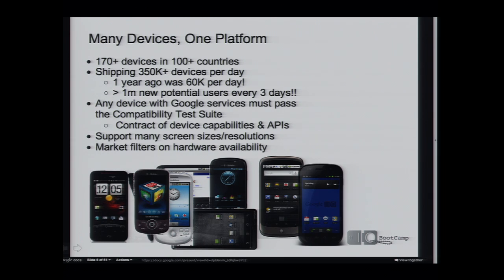That size of opportunity can also seem daunting when you think of the variety and number of devices out there. But the great thing about writing for a platform rather than for a device is that every device with Google services — Android Market, Gmail, Maps — has to pass a compatibility test suite. This guarantees that any app written against the SDK will run on those devices. Android Market also helps by filtering based on what the phone supports.